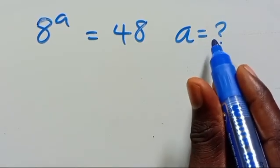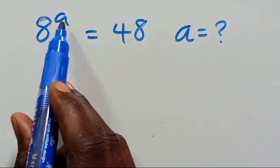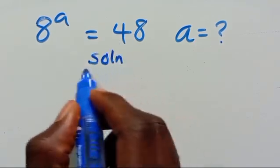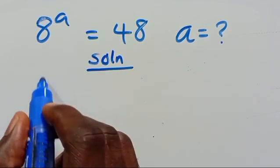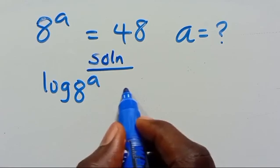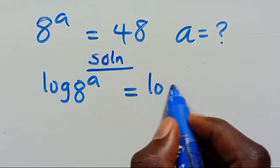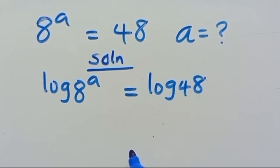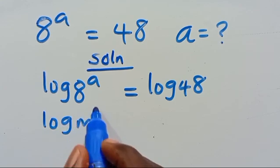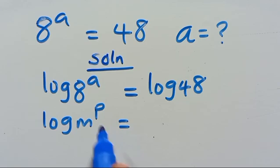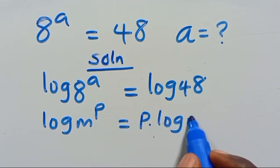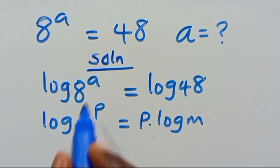Hello. What is the value of a given that 8 to the power of a equals 48? This is very simple. Let us introduce log. Log 8 to the power of a equals log 48. By the property of log, log m to the power of n, the power n will come down and multiply.